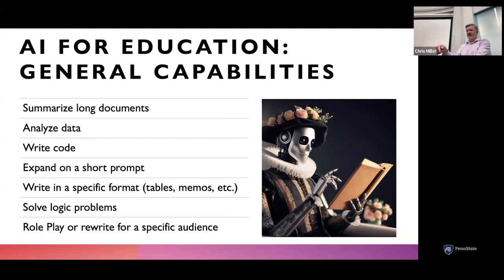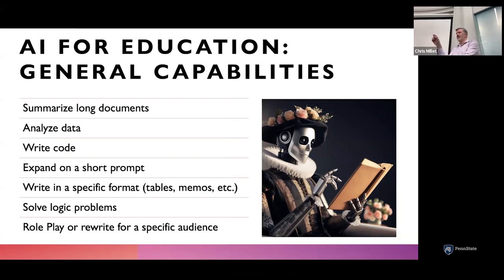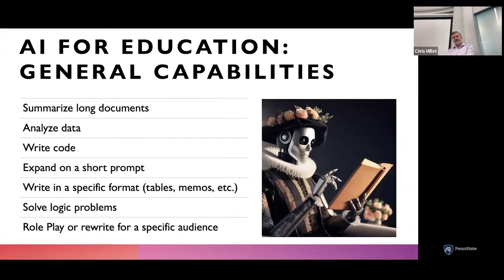For neurodivergent students, AI can restructure information in a way that better suits how they process it. Similarly, if you have a hard time communicating clearly — whether due to neurodivergence or because English is your second language — you can say 'I'm going to do my best to put these ideas together, but I know it's in broken English. Rewrite this more clearly for me.' That's clearly a beneficial capability. Those are some of the basic capabilities of AI worth keeping in mind.